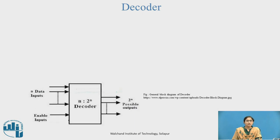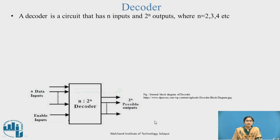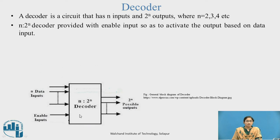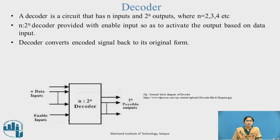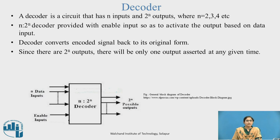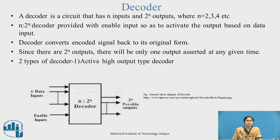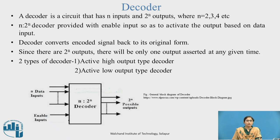Decoder: This is the general block diagram of a decoder. A decoder is a circuit that has n inputs and 2 raised to n outputs, where n equals 2, 3, 4, etc. An n-to-2ⁿ decoder is provided with an enable input to activate the output based on the data input. A decoder converts an encoded signal back to its original form. Since there are 2 raised to n outputs, only one output is asserted at a given time. There are two types: active high output decoder and active low output decoder.